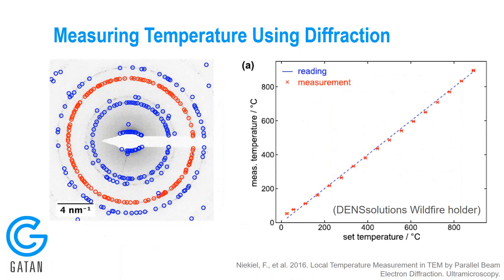Here's another example from a group in Germany. In this case, they used electron diffraction to measure the temperature by measuring subtle shifts in the lattice spacings of the material. As the sample is heated, the lattice expands, and they can do very precise measurements of these diffraction rings. They did very careful calibration and additional alignments of the microscope optics to really do careful measurements of the lattice spacings as they're heating the sample.